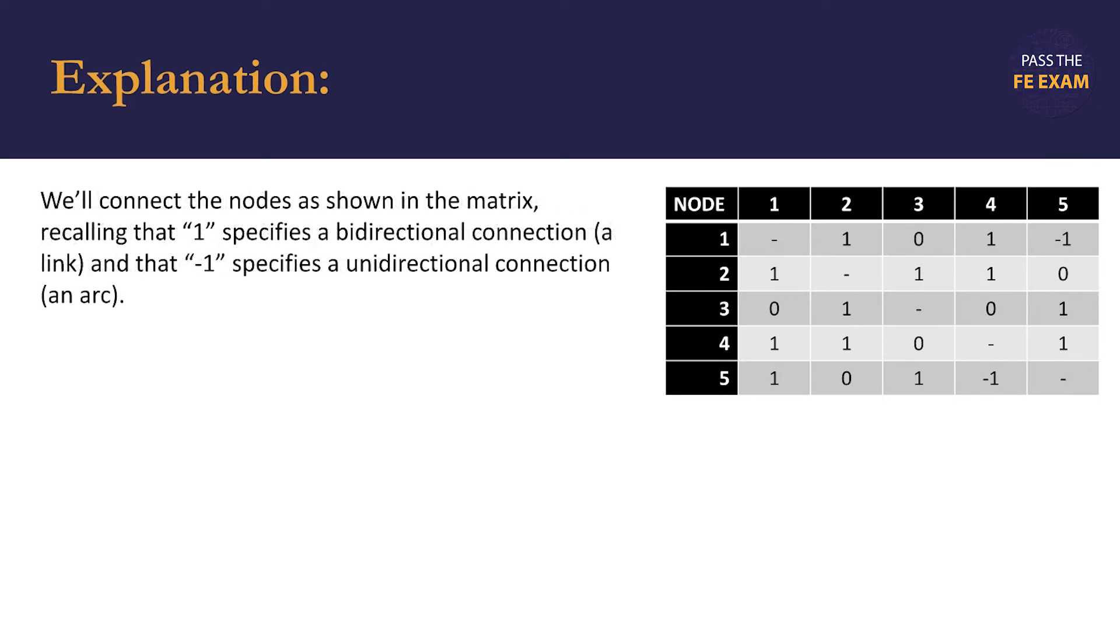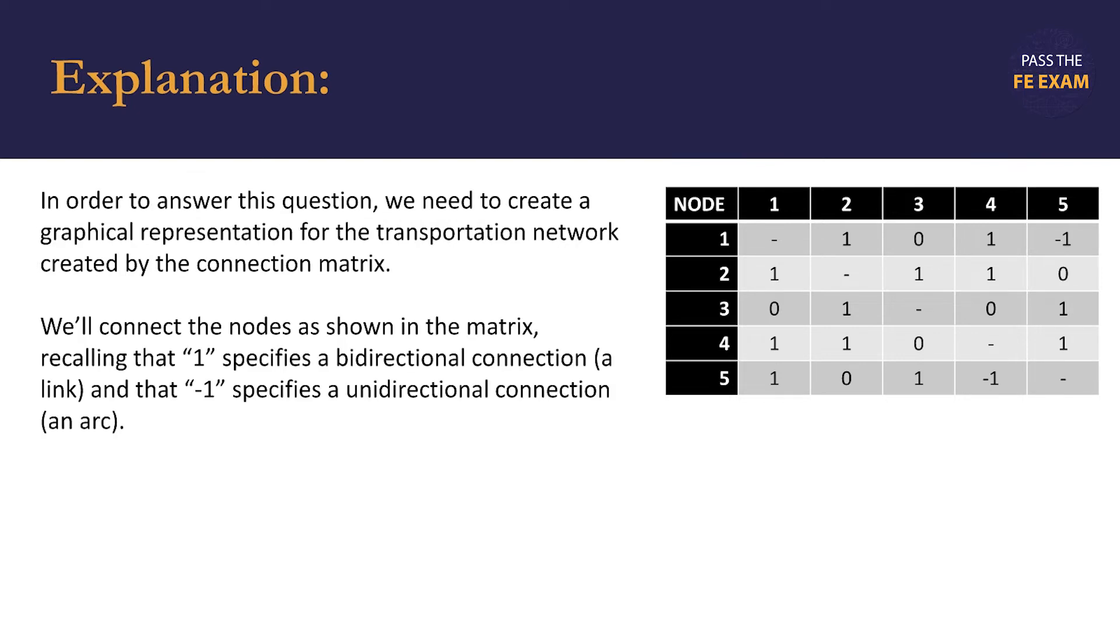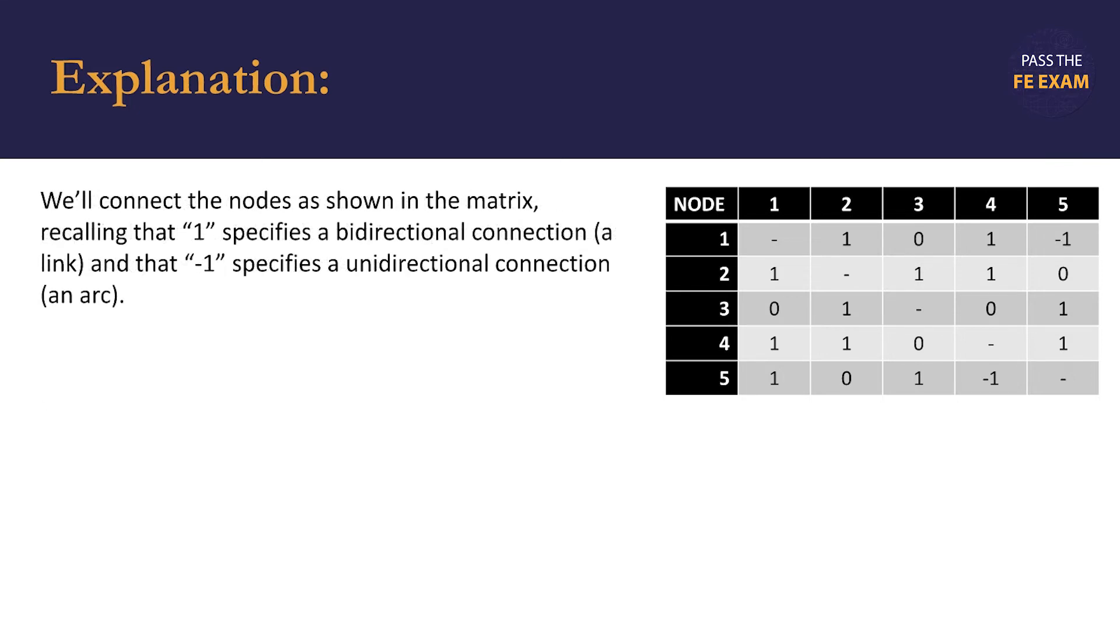In the table to the right, a bidirectional connection, or a link, is indicated by the positive number one. An arc, a unidirectional connection, is indicated by the negative number one. The number zero indicates that there is no connection between the two nodes, and then a hyphen is shown where a connection is not applicable. For instance, a node cannot connect to itself.